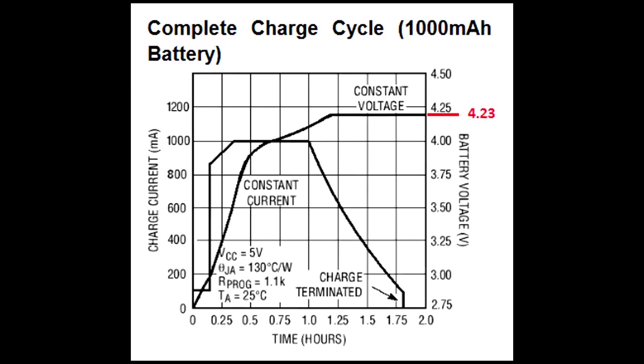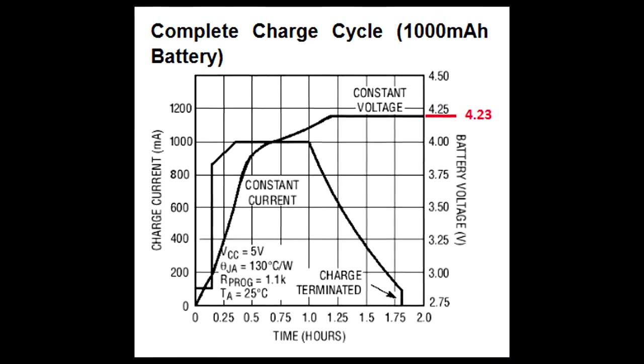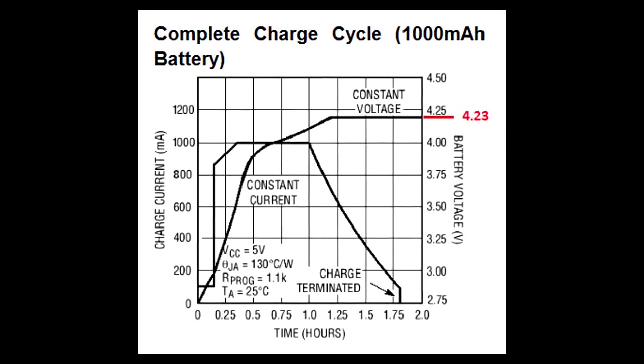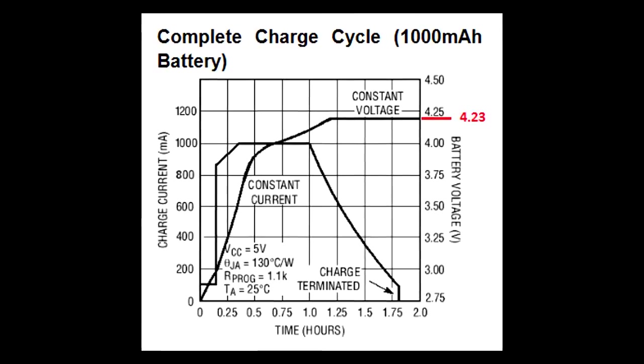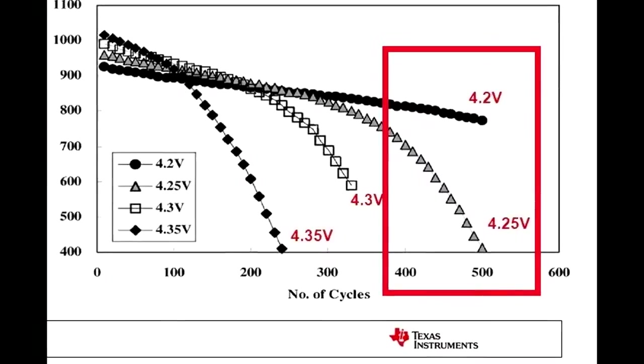A few of my cells have reached voltages of up to 4.23 volts and was still charging. I made these modifications because I thought the cells would be damaged.